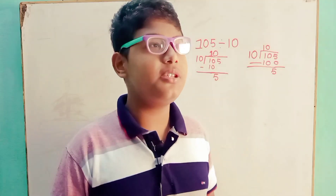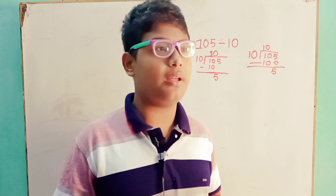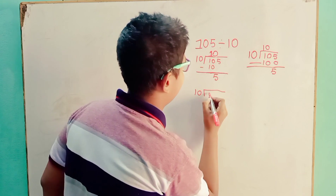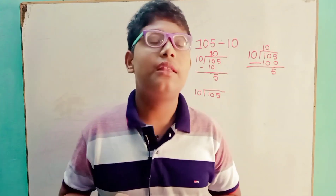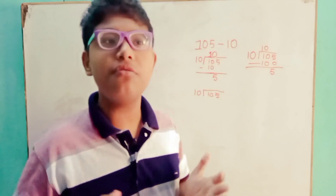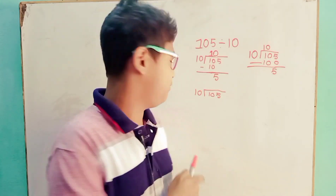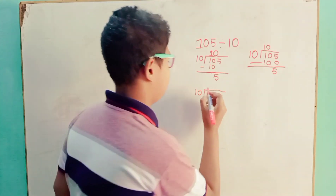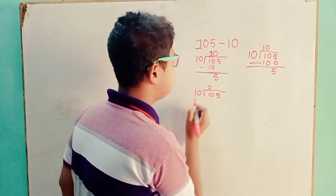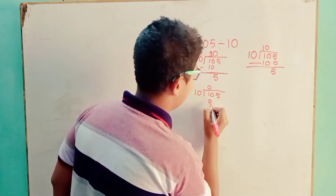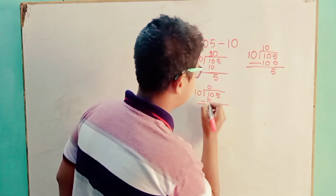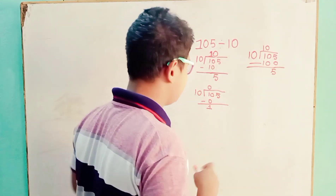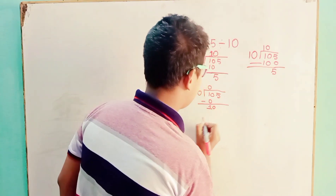Now I will show you the real procedure using the long division method. The divisor 10 goes into the first digit of the dividend, 1, zero times. Therefore, put 0 on top. 10 times 0 equals 0. Minus: 1 minus 0 equals 1. Now, moving down the second digit, 0, we get 10.